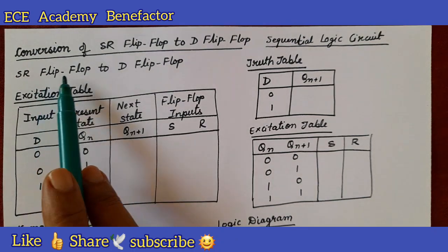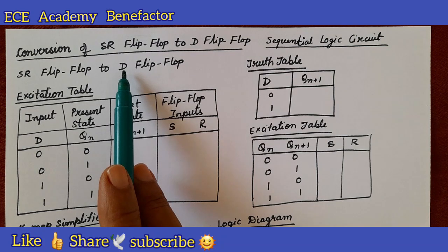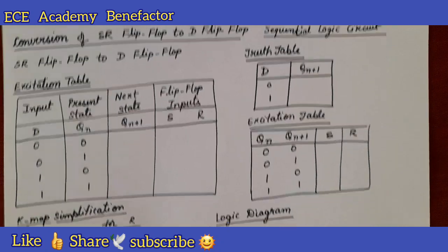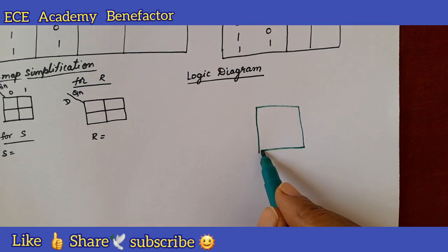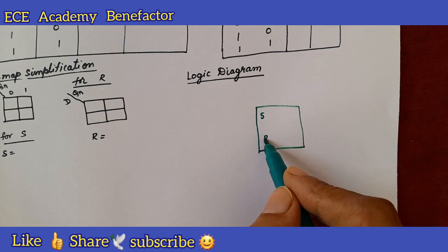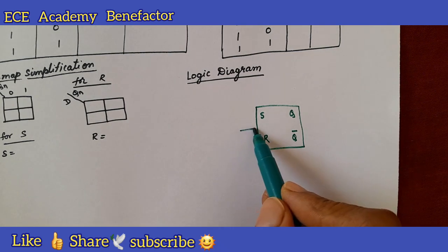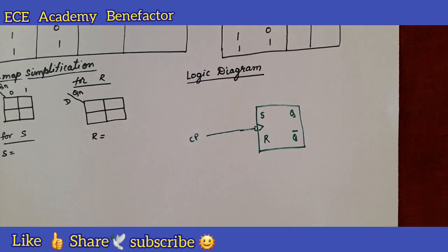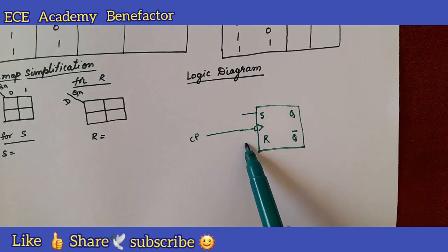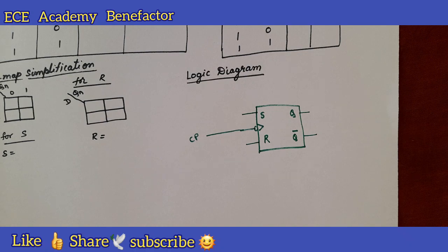We need to convert SR flip flop to D flip flop. SR flip flop is given — it is a negatively edge-triggered clock pulse. This SR flip flop has two inputs S and R and two outputs Q and Q bar. We need to convert this SR flip flop to D flip flop, and for that we need to prepare the excitation table.